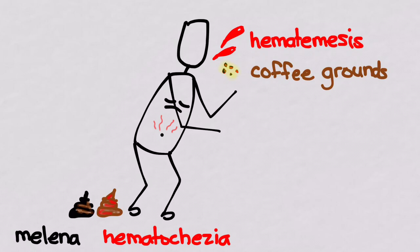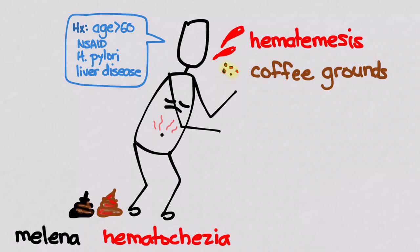As we talked about the pathophysiology, the important things you want to look for on your history is age greater than 60, NSAID use, history of H. pylori, or liver disease. On your physical exam, you might see the stigmata of liver disease such as jaundice, palmar erythema, spider angiomas, gynecomastia, an ascitic belly.